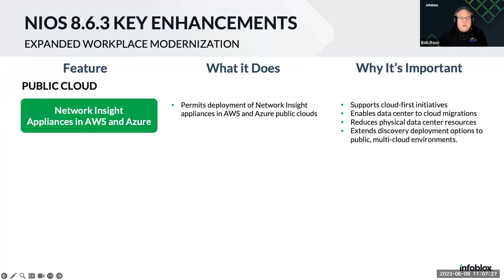With regard to public cloud, one of the big exciting announcements is Network Insight Appliances in AWS and Azure. This gives you the opportunity to deploy Network Insight in AWS and Azure public clouds. It's important for organizations with a cloud-first initiative, those trying to reduce the footprint of their physical data center, or those wanting to extend discovery deployment options. This gives you the flexibility to do that.